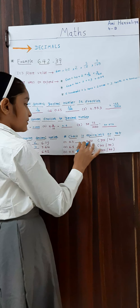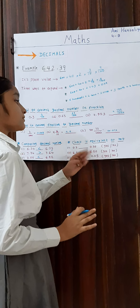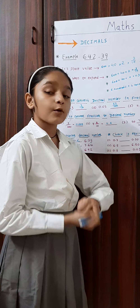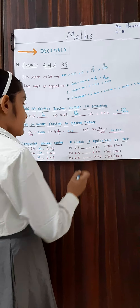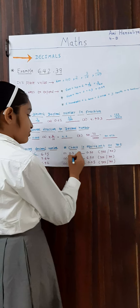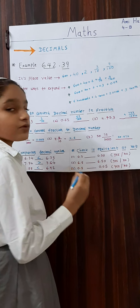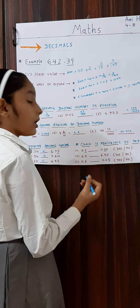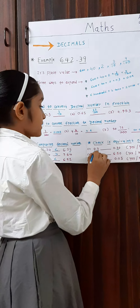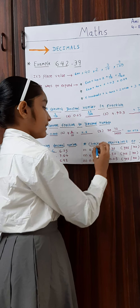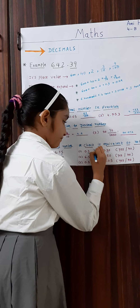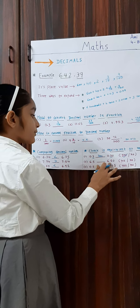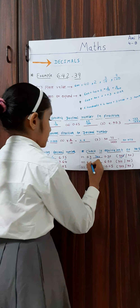Now let's check if numbers are equivalent or not. Take 0.3 and 0.30 — we check the place value. Both have 3 in the tenths place, so yes, they are equal. Similarly, 6.5 and 6.50 — both have 5 in the tenths place, so these are also equal.